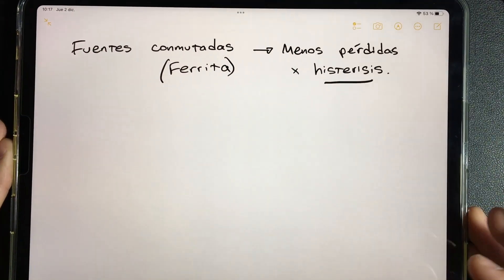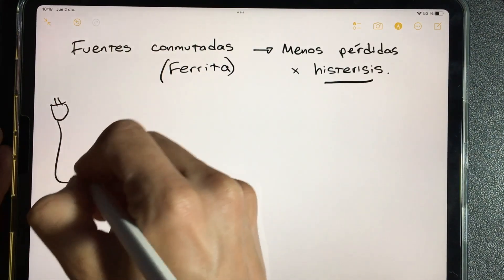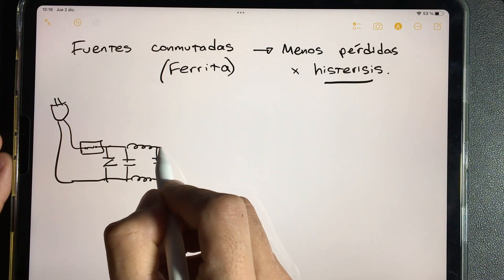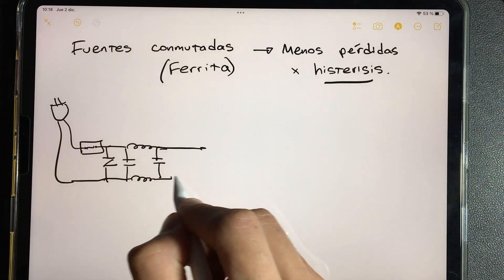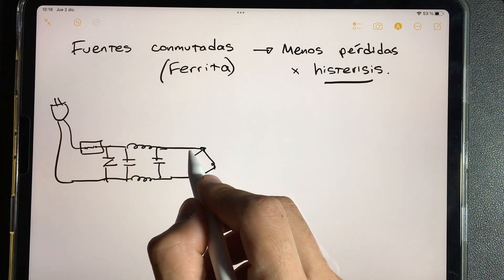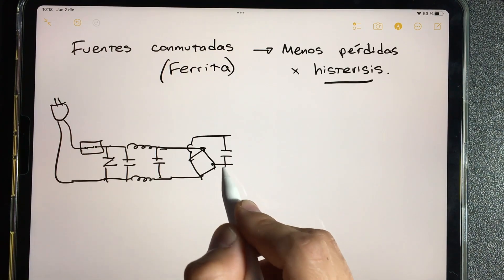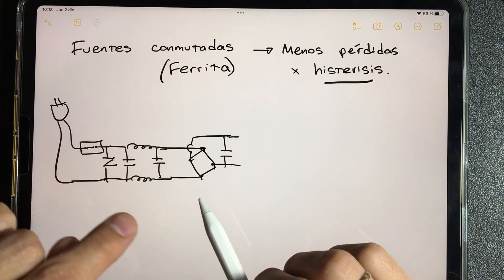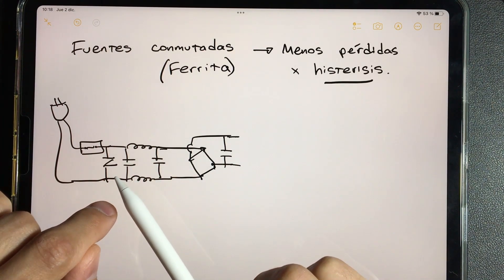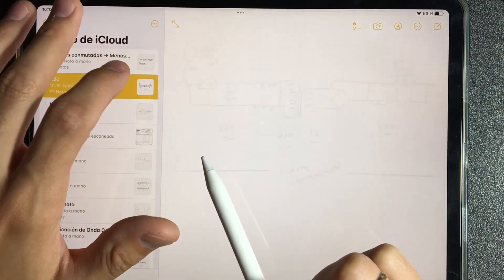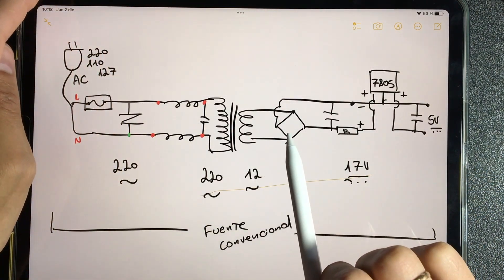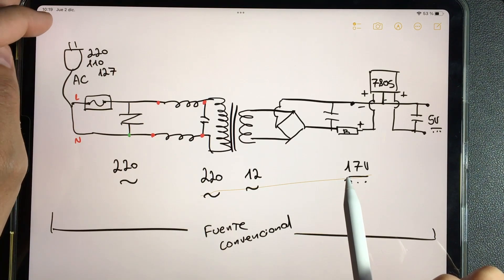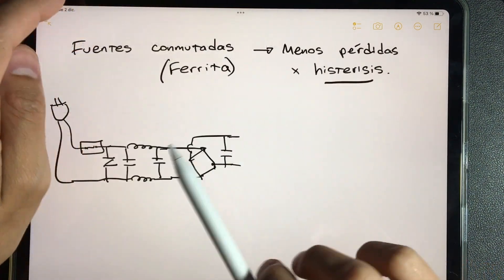In a switched mode power supply we will have a voltage input, a fuse, a varistor, a double pi filter. You already know how all this works. After that, we go directly to that component that you already know how it works: a rectifier and a filter. The big difference is here. In a conventional power supply we go to a transformer, we reduce the voltage, and then we go to the rectifier. That's why we enter with 12 and we come out with 17 and direct current.